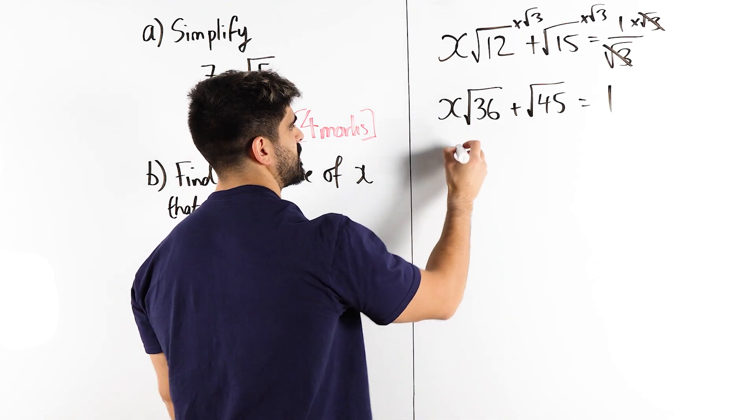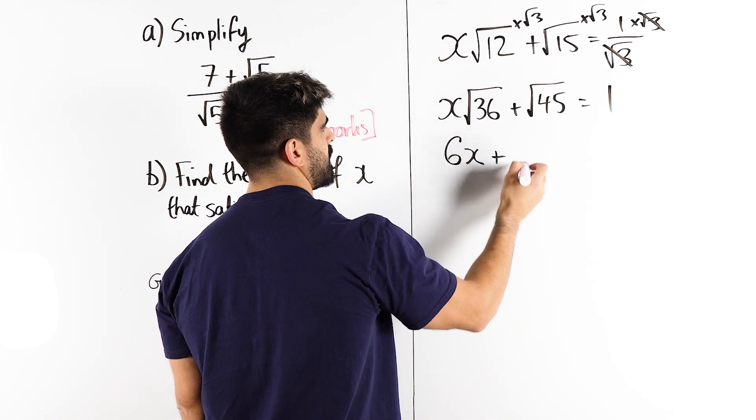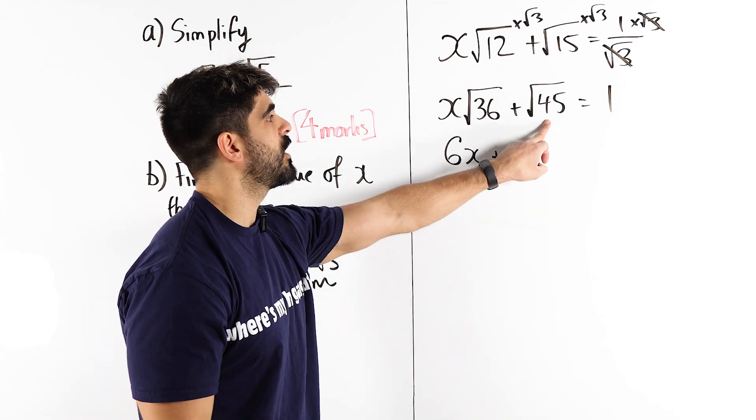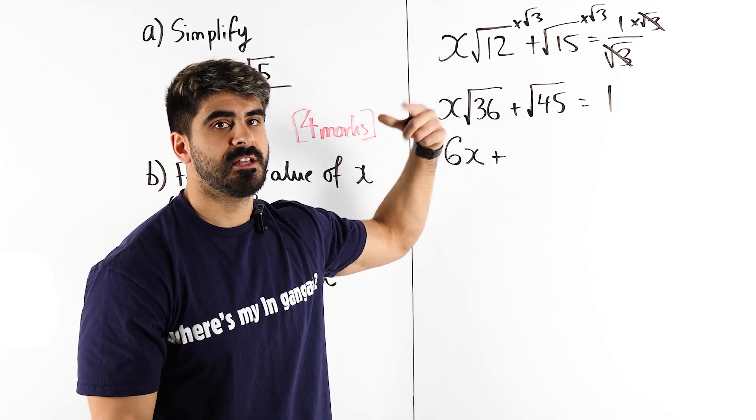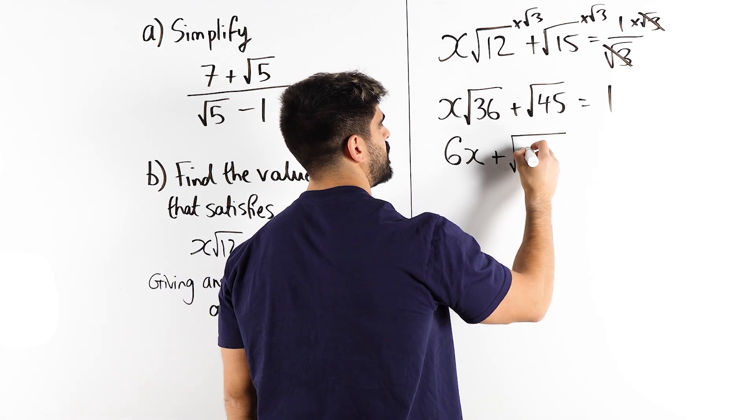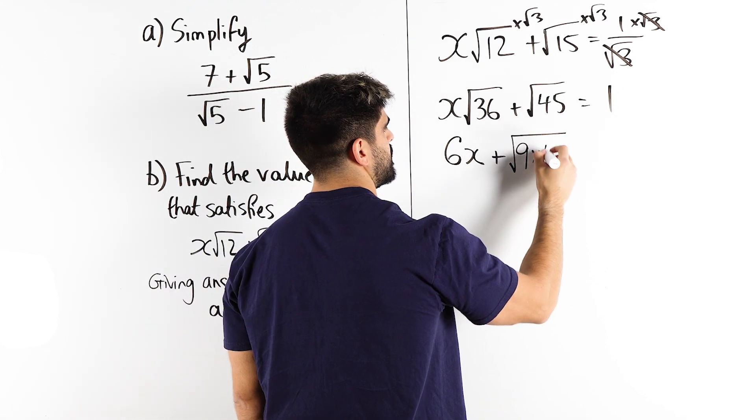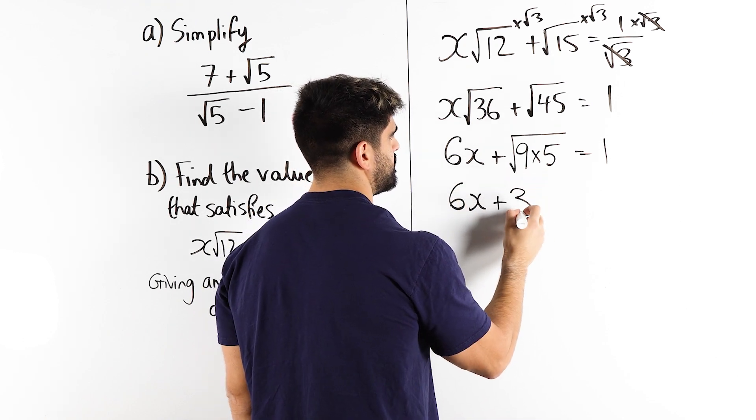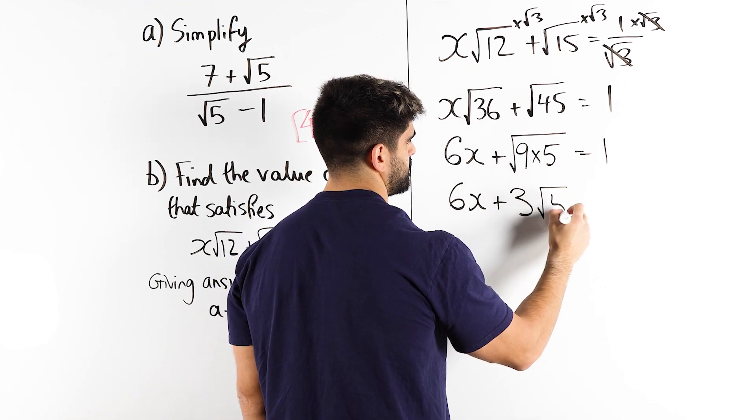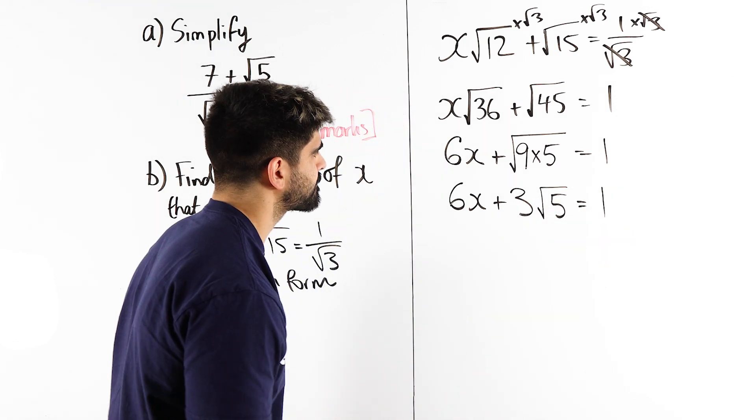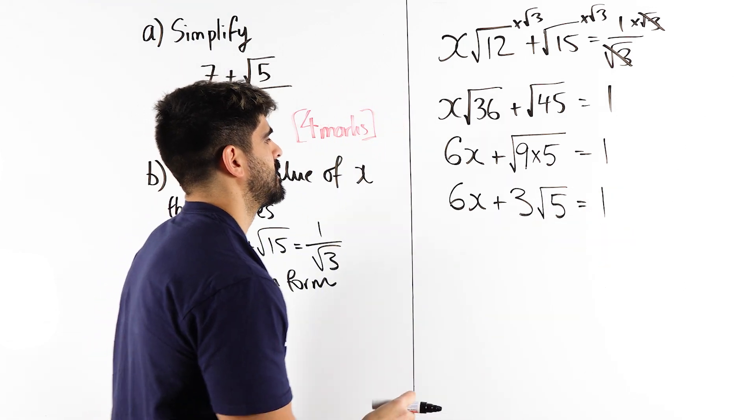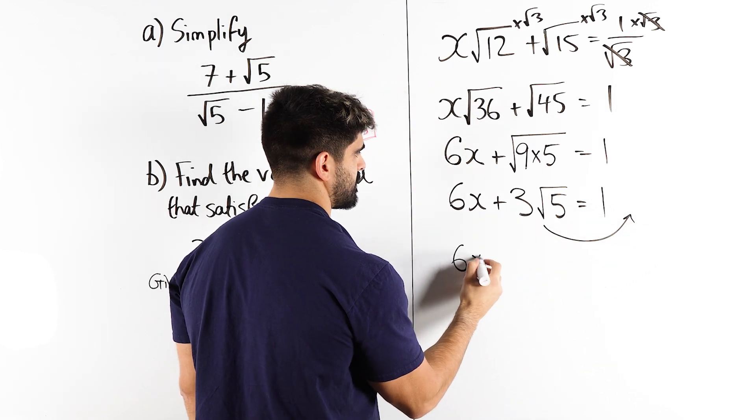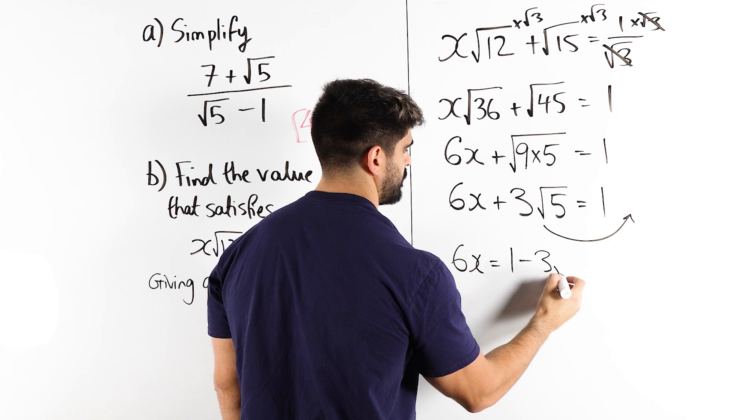Because root of 36 is just 6, so we get 6x plus root 45. Now here again, I'm going to start simplifying that. Square number that goes into 45, 9. I'm going to write this as the root of 9 times 5 is 1. Root of 9 is 3. Root of 5, it's irrational, is 1. So let's take this plus 3 root 5, let's move it to the other side. So we get 6x is 1, take away 3 root 5. And then finally we're going to divide by 6.